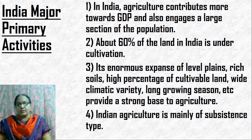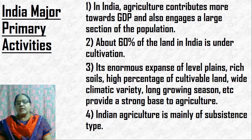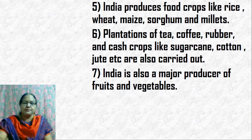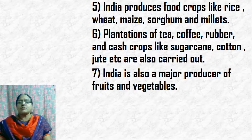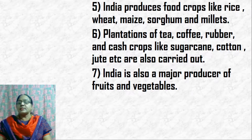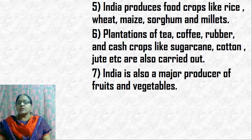Indian agriculture is of subsistence type — the farmer produces primarily for his own family, and whatever is left goes to the market. The principal food crops produced in India are rice, wheat, maize, sorghum, and millets. Apart from that, plantation crops like tea, coffee, and rubber, as well as cash crops like sugarcane, cotton, and jute are also produced on a large scale.